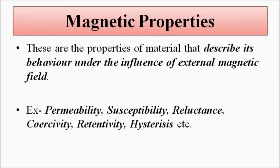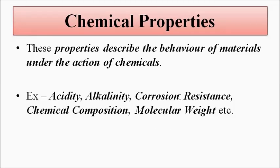Chemical properties describe how the material responds to various chemicals that are added to it. The parameters studied are: acidity, alkalinity, neutrality, corrosion resistance, chemical composition, and molecular weight.